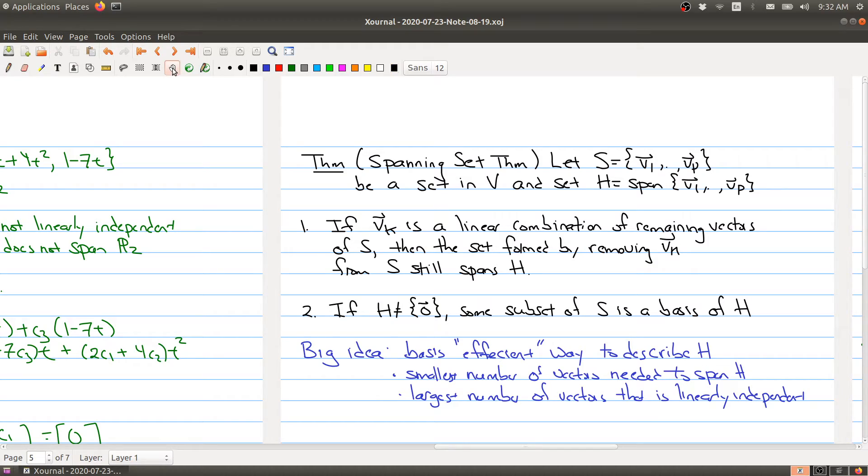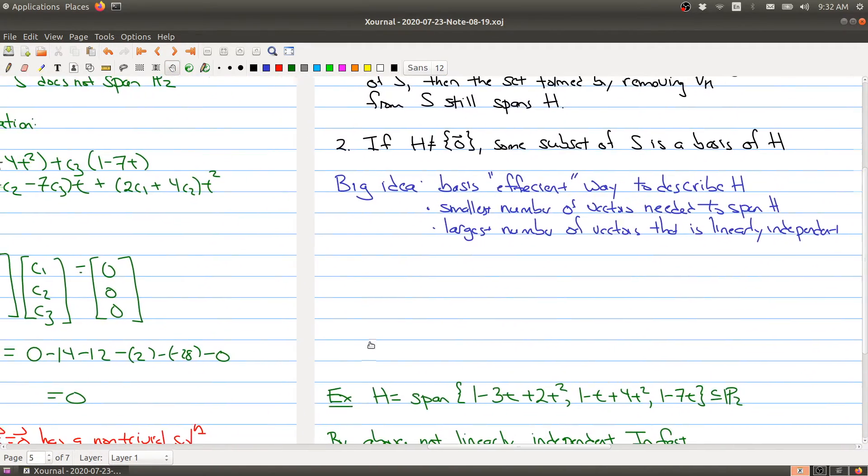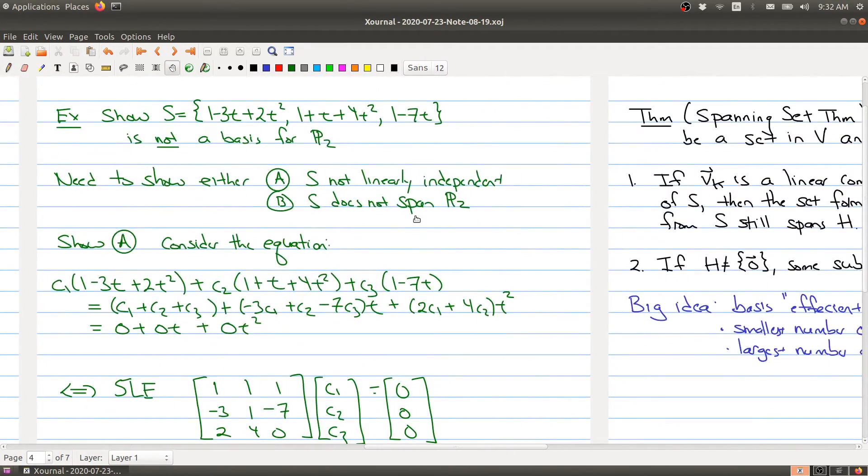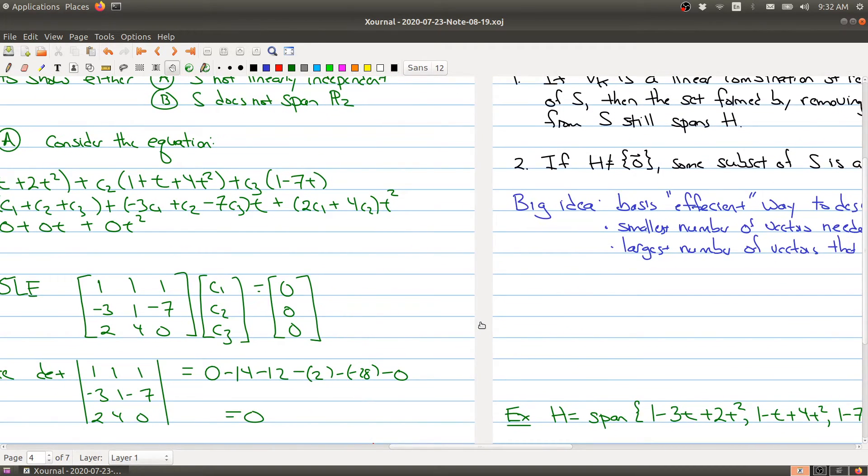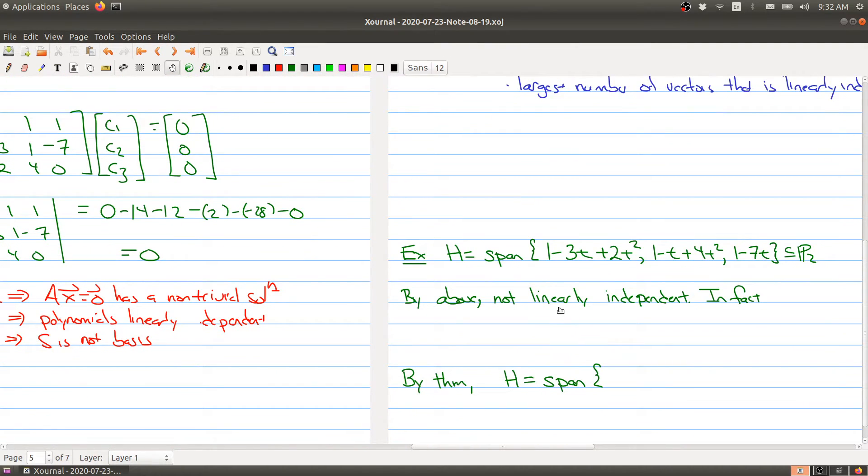Let me give you an example of the spanning set theorem using our previous example. We're going to build upon that one. If we take H to be the span of these vectors, by the above, the vectors inside here are not linearly independent. We didn't go and figure out a linear dependence relation,